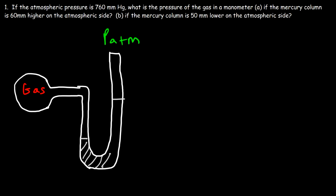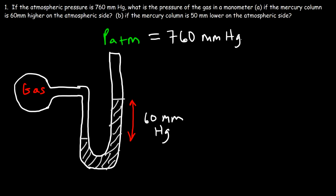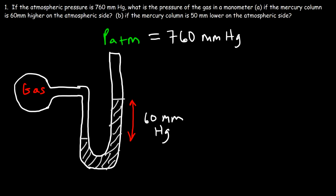Mercury has a grayish color to it, so I'm going to use a light gray color. The height difference between these two points is 60 millimeters of mercury. To calculate the gas pressure, you either have to add or subtract 60 from 760 — so the answer is either 760 plus 60 or 760 minus 60.